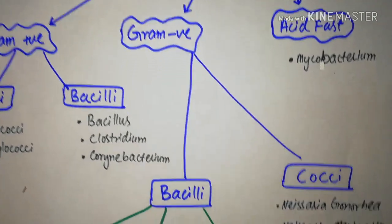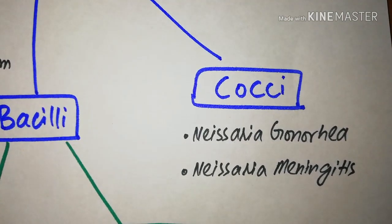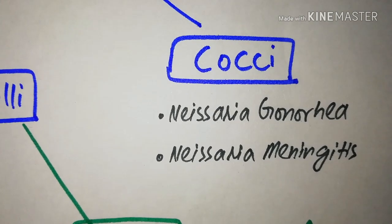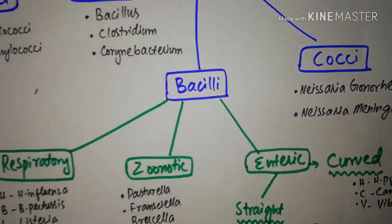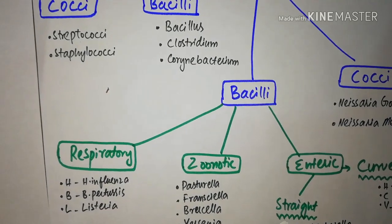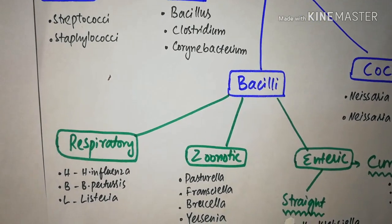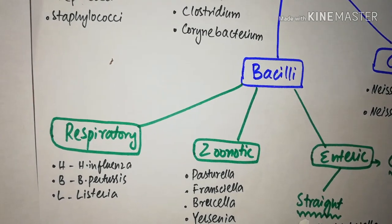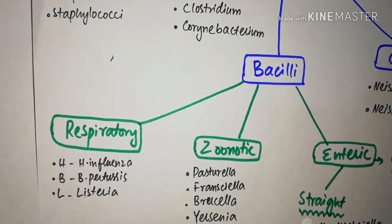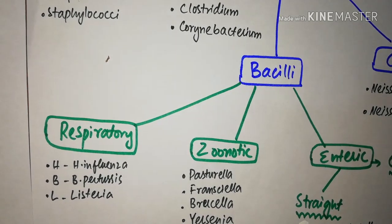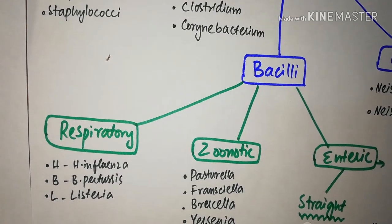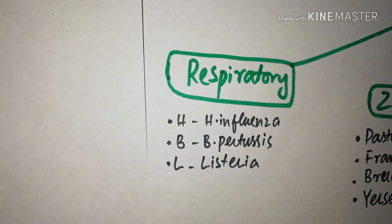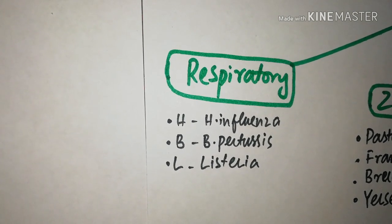Gram negative cocci includes Neisseria gonorrhoeae and Neisseria meningitidis, the cause of gonorrhea and meningitis respectively. The gram negative bacilli is a large group, so we divide it into respiratory, zoonotic, and enteric groups depending upon where and how they cause infection. The respiratory group includes H. influenzae, Bordetella pertussis, and Listeria, and can easily be memorized by the mnemonic HBL — like Habib Bank Limited, the largest bank of Pakistan.